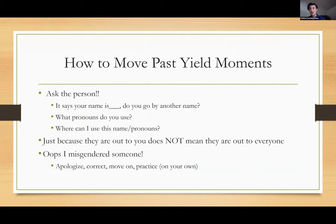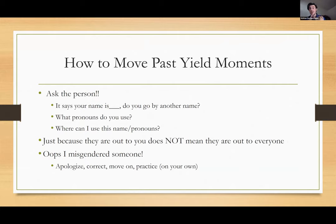Oftentimes people will want to continue to apologize, and that just makes the situation uncomfortable. Because then oftentimes the queer person who was just misgendered has to console the person that misgendered them. So it turns into a weird flipped situation that isn't necessarily healthy or respectful. Just quick, easy: apologize, correct, move on, and then practice.